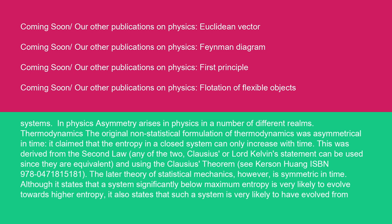In physics, asymmetry arises in physics in a number of different realms. Thermodynamics. The original non-statistical formulation of thermodynamics was asymmetrical in time. It claimed that the entropy in a closed system can only increase with time. This was derived from the second law. Either the Clausius or Lord Kelvin statement could be used since they are equivalent, and using the Clausius theorem (see Kerson Huang ISBN 978-047-1815181).